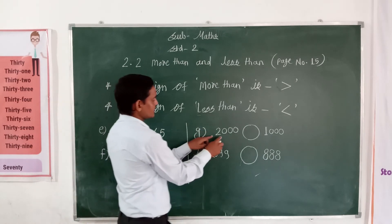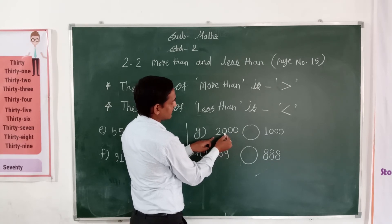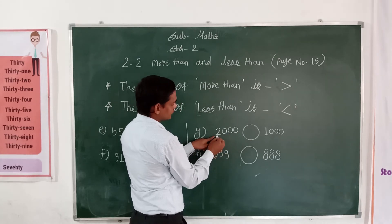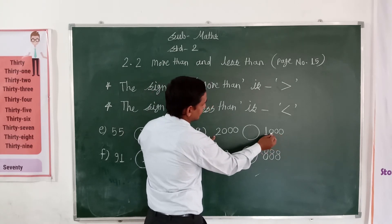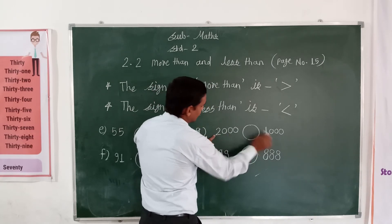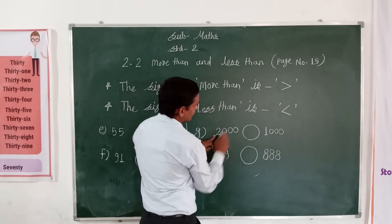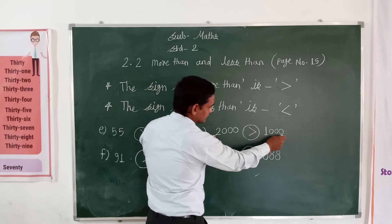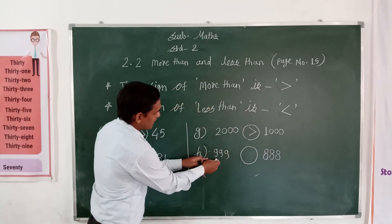Look here. The first number is 2,000 — ones, tens, hundreds, thousands — and the second number is 1,000. So 2,000 is the greater number, means more. Write down the more than sign: 2,000 is more than 1,000.